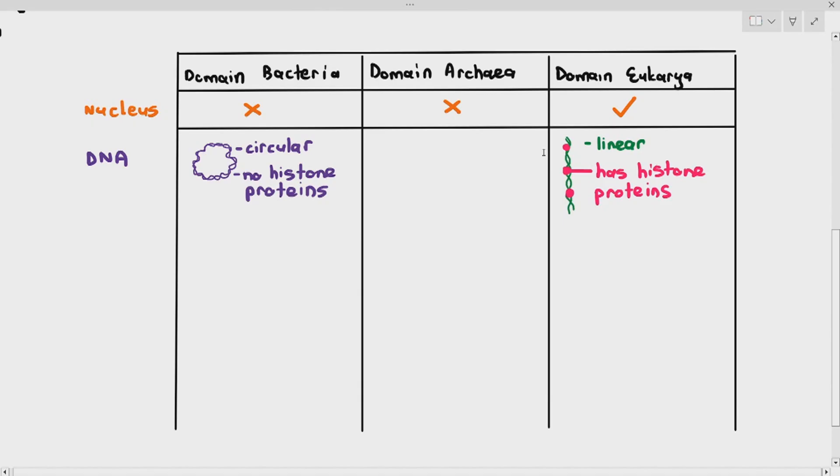Archaea is where it gets a little bit interesting. Because while the DNA is circular, like bacteria, it has histone proteins, like eukarya. So that's why some scientists are saying that archaea is sort of like the middle ground between the evolution billions of years ago from bacteria to eukaryotes.